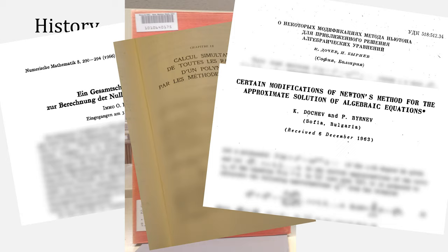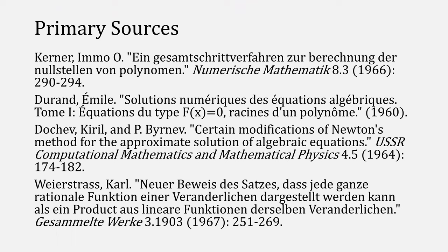And in 1963, Dokyev published this paper, which has this English translation detailing a very similar approach to the other two. All of these people though were rediscovering a method by Weierstrass, which had been published much earlier.